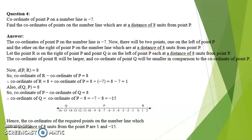Welcome to video number 7 for chapter 1 of Maths 2 Standard 9. We are discussing problem set 1, question number 4. The coordinate of point P on a number line is minus 7. Find the coordinates of points on the number line which are at a distance of 8 units from point P.